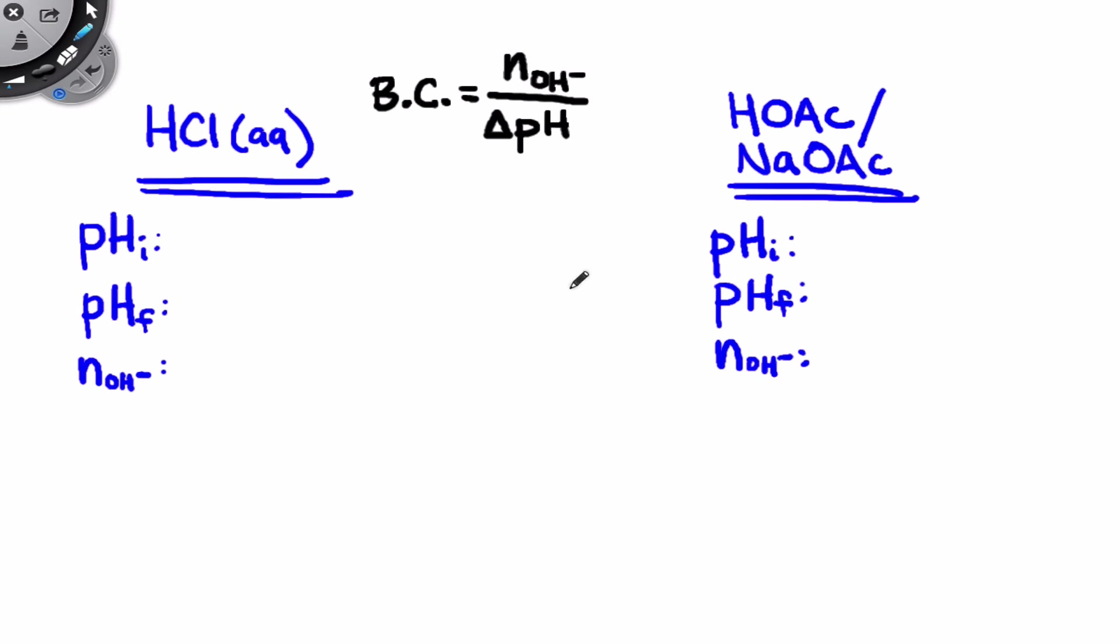Let's see if that holds up for the observations we just made. So the initial pHs for both the HCl solution and the buffer solution were about 4.7, and let's call them both 4.70. After we added the 10 drops of 0.1 molar sodium hydroxide, we observed a final pH in the buffer solution of about 4.73, and in the case of the HCl, the final pH was about 9.89.